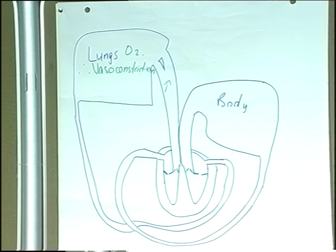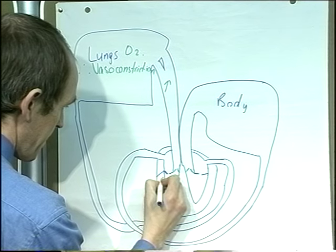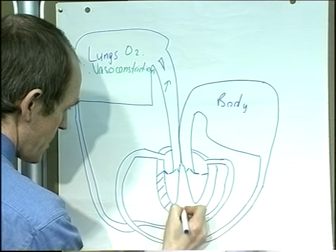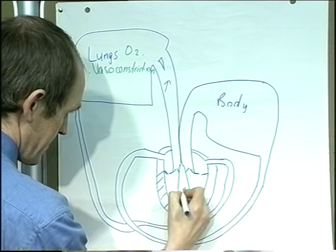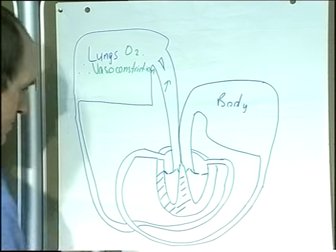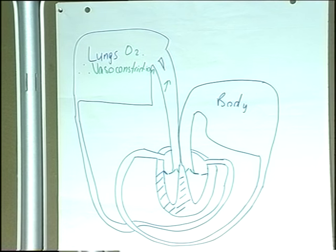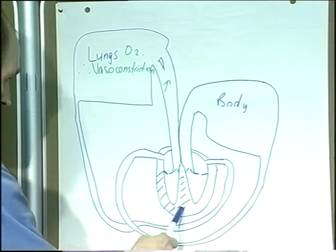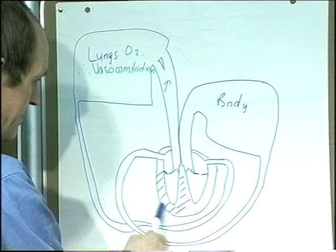That means the right ventricle here must work harder to pump the blood through the lungs and the pulmonary artery. That increases its workload, causing hypertrophy and, ultimately, failure.